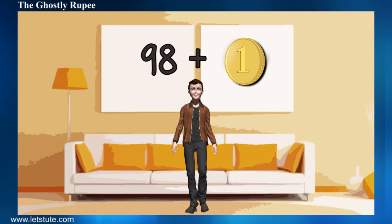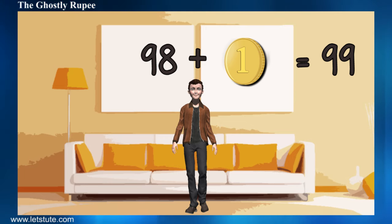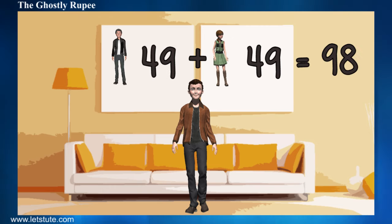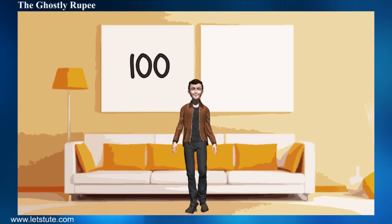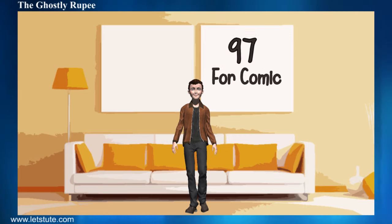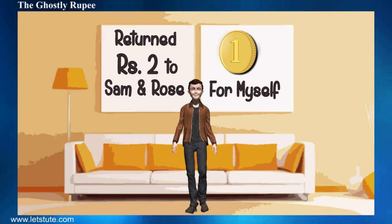So the total is 98 plus 1, which gives us 99. Where did the remaining rupee go? Where did we mess up? Let's go through everything once again. You had 100 rupees in total. You bought the comic book for 97.